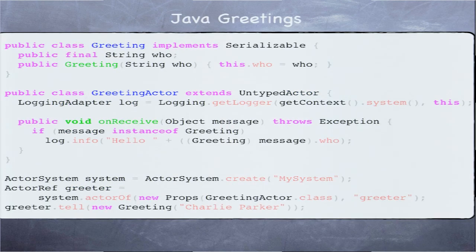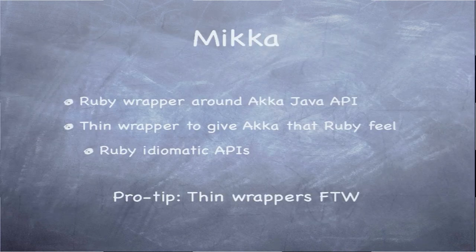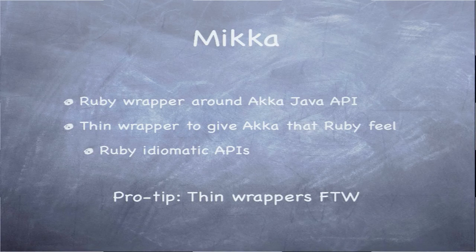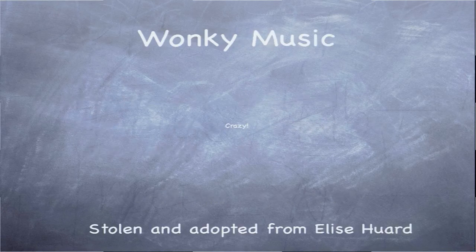Here's what the Java Akka API looks like — it largely looks the same. We have a struct class at the top, the greeting actor extends a slightly different class, and 'receive' is now called 'onReceive.' At the bottom it's almost exactly the same except instead of an exclamation point there's a 'tell' method which does the same thing. My experience with using Akka is through a library called Mika — a thin API around Akka's Java API that really does feel like a Ruby API.